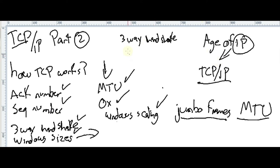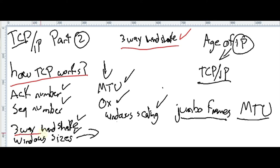So we covered the three-way handshake — how it works, how it starts and finishes, and how window size works with Maximum Segment Size. We didn't see window scaling yet — we'll see that in the next part, along with sequence numbers and acknowledgment numbers. See you next time!